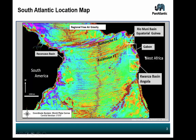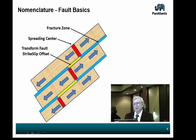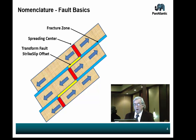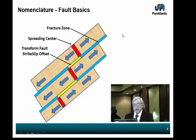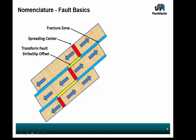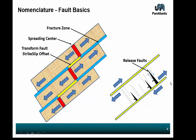As I was looking through the data, I found that there are different terms to describe a single item, so I'll do a little nomenclature — fault basics. This basically sets the tone for my talk. Spreading centers are shown in red. In between spreading centers in yellow is a transfer fault where the rocks are moving in opposite directions. And of course, a fracture zone where the rocks are moving in the same direction. These fault zones and boundaries are easily picked up by gravity. Near these transfer faults, release faults are generated — normal faults down the basin, but they're deep and big, and they can produce many sub-basins, as we will see later.